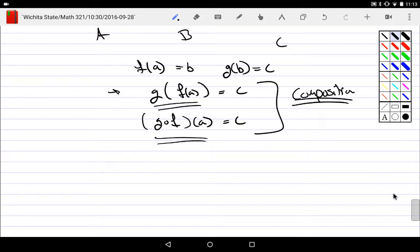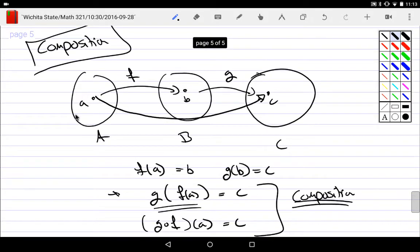What's necessary? What's absolutely necessary is who's the domain of F? Who's the co-domain of F? And that co-domain of F better be G's domain. And then it'll spit out the co-domain of G.